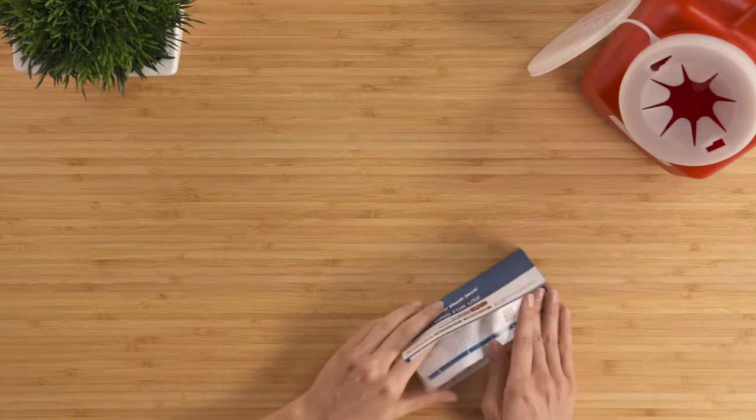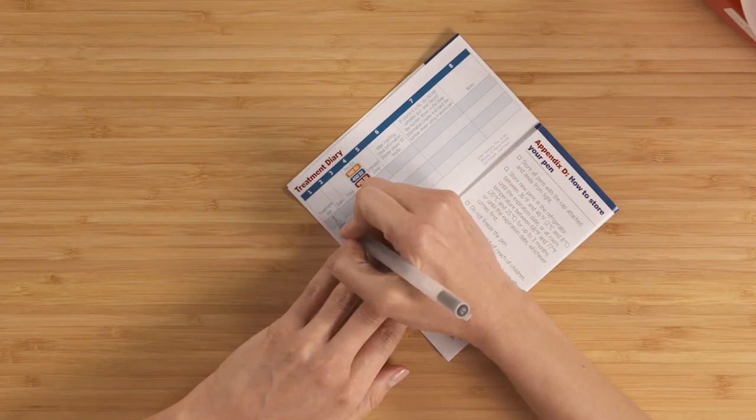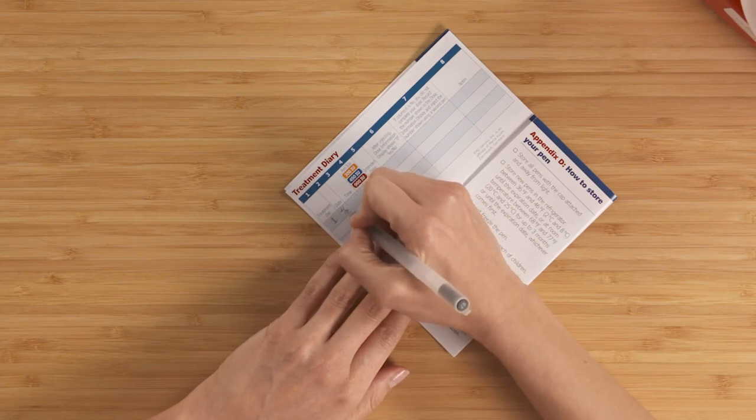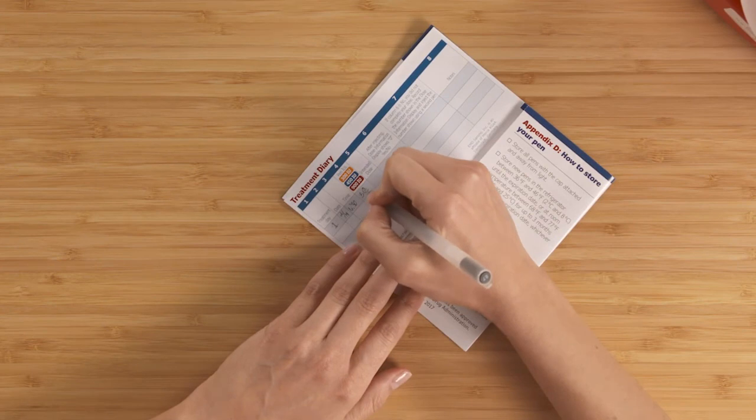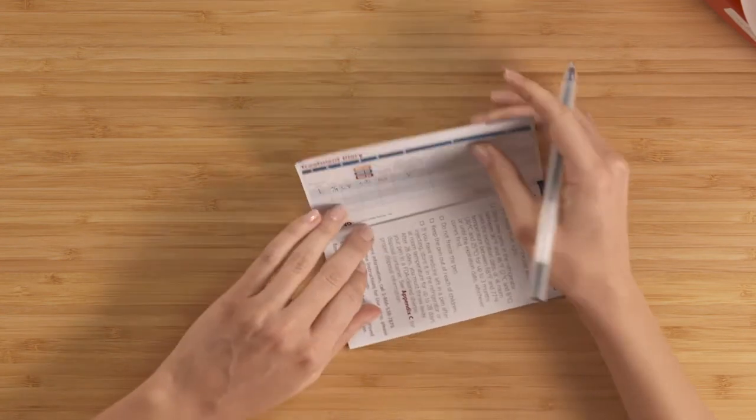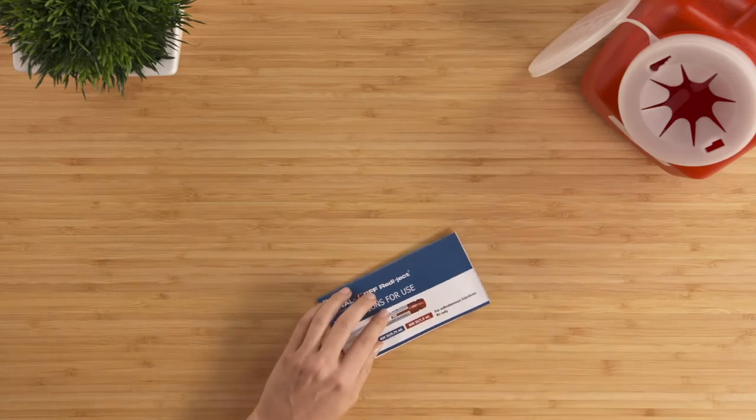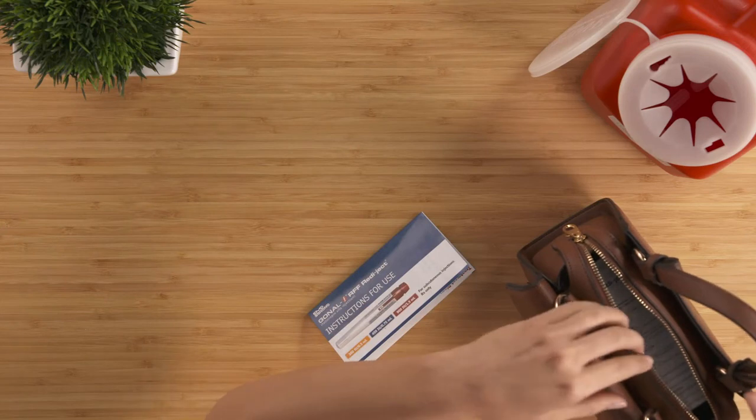In your instructions for use, you'll notice a treatment diary, which can be cut or torn off. With this, you can record your injection, the last step of the instructions for use. This step is optional, but I find it's a great way to keep track of my injections to ensure I'm always taking the right dose. I take this with me to appointments for reference, so I know exactly when and how much medicine I've taken.